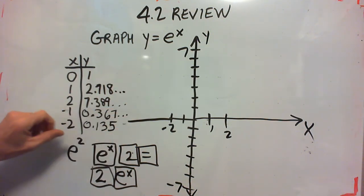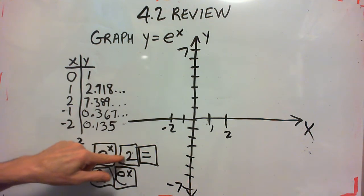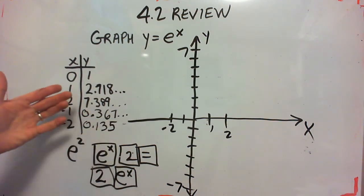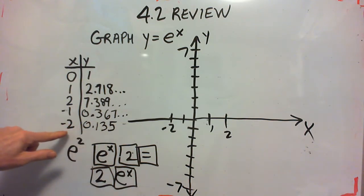e to the negative 1, you have to raise e to the negative 1 power. You should get 0.367 and e to the negative 2 is 0.135.